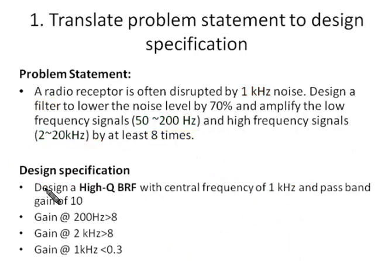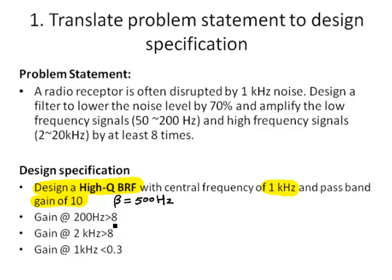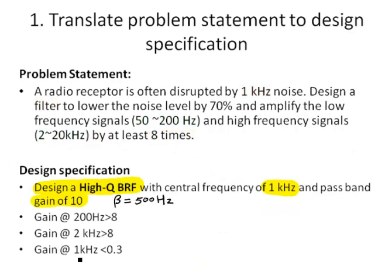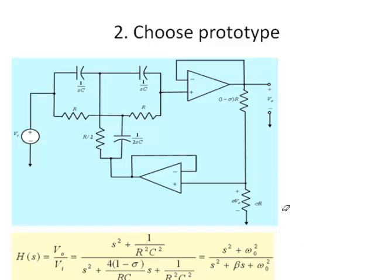Here is our design specification. We want to design a high Q band reject filter. The central frequency should be 1 kHz, and the pass band gain is 10. For the frequency at 200 Hz, the gain should be at least 8. When the frequency is 2 kHz or greater, the pass band gain should also be at least 8. At 1 kHz, the gain of the circuit should be at most 0.3.